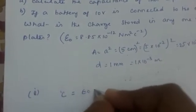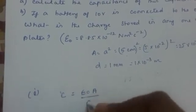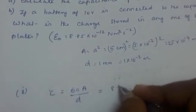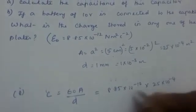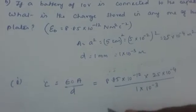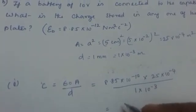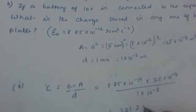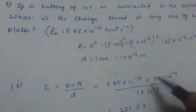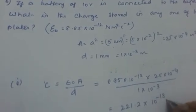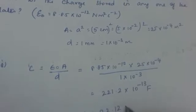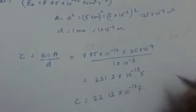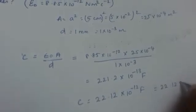The first part is capacitance of the capacitor. To find out the capacitance, we write the formula: C is equal to epsilon 0 A by D. Now, epsilon 0 is 8.85 into 10 raised to minus 12, area is 25 into 10 raised to minus 4, divided by D which is 1 into 10 raised to minus 3. Multiplying 8.85 into 25 gives 221.2. The powers give minus 16 plus 3, so it is 221.2 into 10 raised to minus 13 farad, which can be written as 22.12 into 10 raised to minus 12 farad.